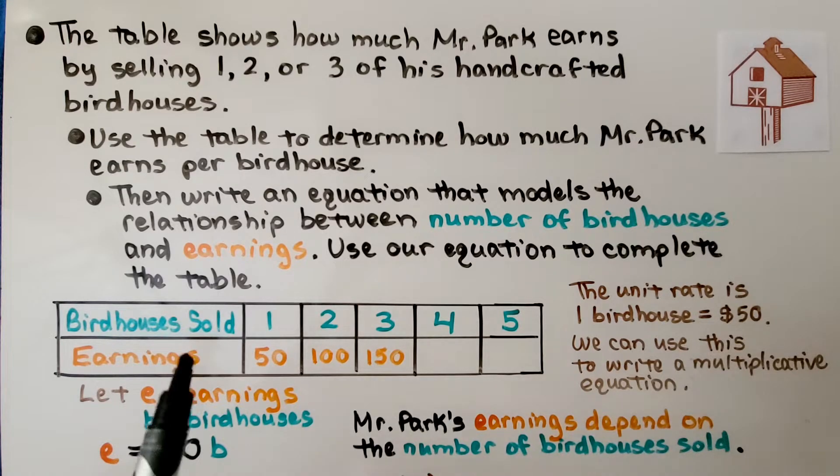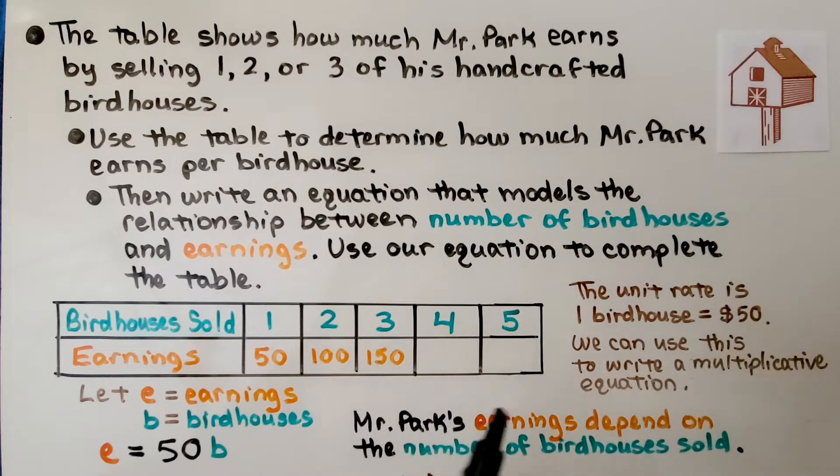The table shows how much Mr. Park earns by selling one, two, or three of his handcrafted birdhouses. Use the table to determine how much Mr. Park earns per birdhouse. Then write an equation that models the relationship between the number of birdhouses and earnings. Use our equation to complete the table.